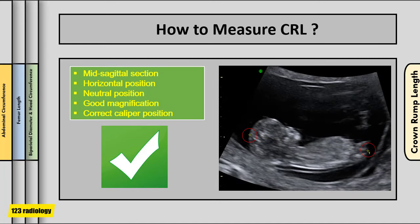This is an example of correct crown rump length measurement. As you can see, this is a mid-sagittal section of the fetus; the fetus is in a horizontal and neutral position, there is good magnification so you can clearly see the ends of the fetus, and the calipers are correctly placed — giving an accurate estimation of crown rump length.